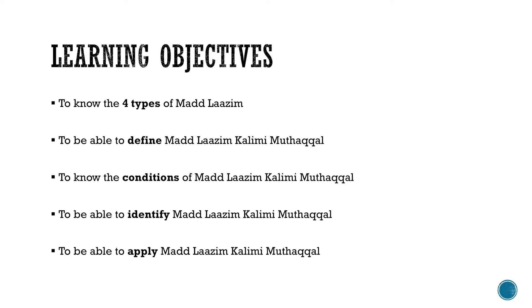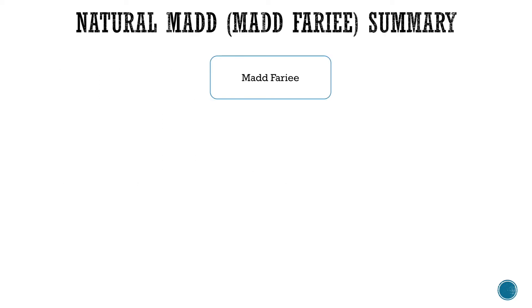we will be covering مَدْ لَازِمْ كَلَمِي مُثَقَّل. Our learning objectives are: 1. To know the four types of مَدْ لَازِمْ. 2. To be able to define مَدْ لَازِمْ كَلَمِي مُثَقَّل. 3. To know the conditions of مَدْ لَازِمْ كَلَمِي مُثَقَّل. 4. To be able to identify مَدْ لَازِمْ كَلَمِي مُثَقَّل. And finally, to be able to apply مَدْ لَازِمْ كَلَمِي مُثَقَّل.